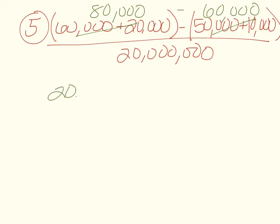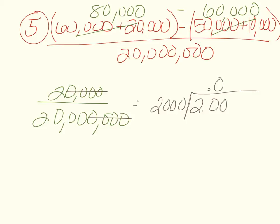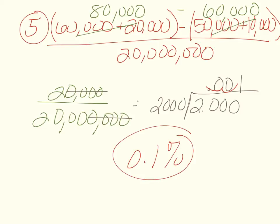So 80,000 minus 60,000 equals 20,000, divided by 20 million. Cross out four zeros on each side — now we have 2,000 going into 2. Here's our decimal; bring it up. Add zeros until it goes in once — our answer is 0.001, which moving the decimal over twice gives us 0.1% growth rate.